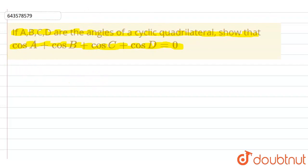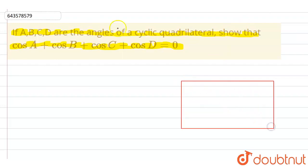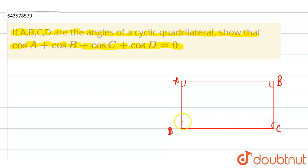So basically in this question we have given that A, B, C, D are the angles of a cyclic quadrilateral. Suppose this is our cyclic quadrilateral A B C D. These are the four angles of the cyclic quadrilateral. Now with the help of this given information, we have to show that cos A plus cos B plus cos C plus cos D equals to zero.